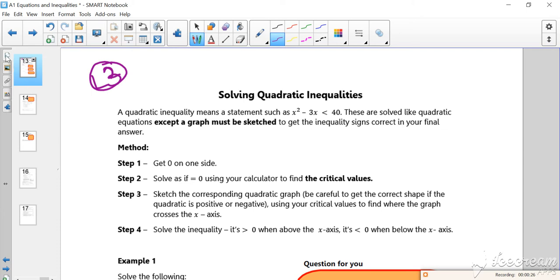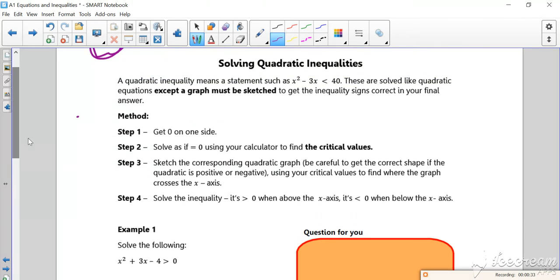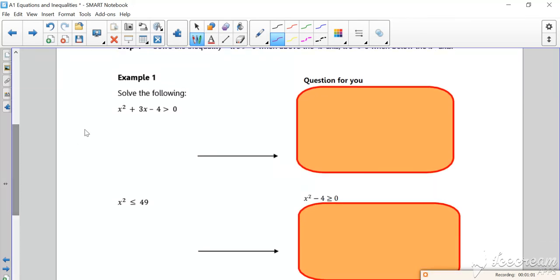Quadratic inequalities are really important. What you do is solve it, graph it, and identify the region. So we solve, graph, and identify. If I look at this one in poly, if I put 1, 3, 4, I get...